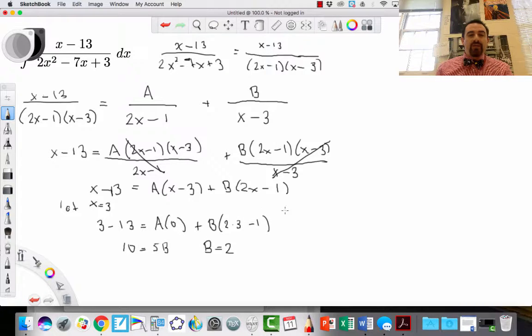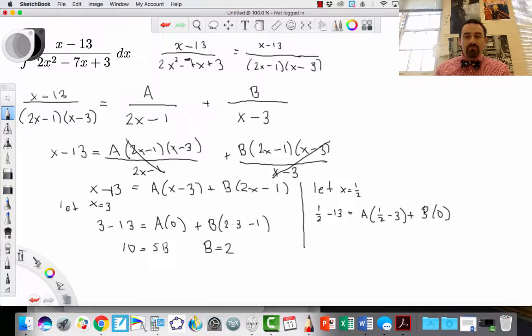So I can substitute that back in. So that's how I'm going to find the value for B. I can do the exact same idea for the value of A. So now I'm going to let x be equal to a half. If I let x equal a half, that's going to cause the term with B to go to 0. And that's what I want. So I'm going to go 1 half minus 13—so I'm plugging x equals 1 half into the whole equation—equals A times a half minus 3 plus B. And this factor, by the way, that I chose x goes to 0.